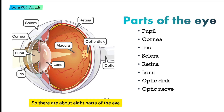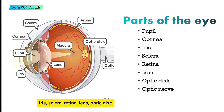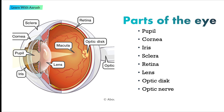So there are about 8 parts of the eye: the pupil, the cornea, iris, sclera, retina, lens, optic disc, and optic nerve.